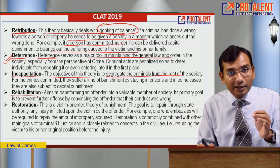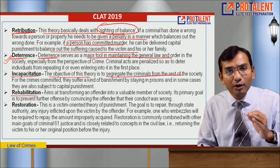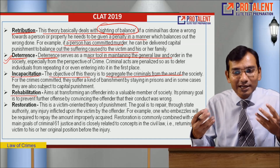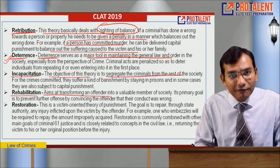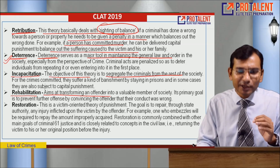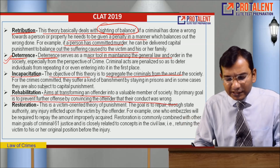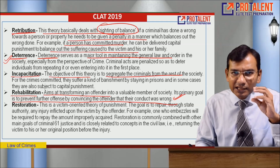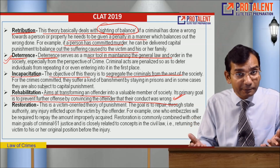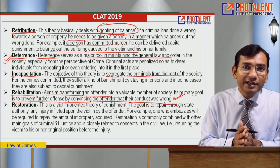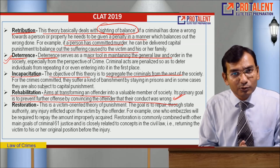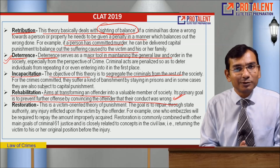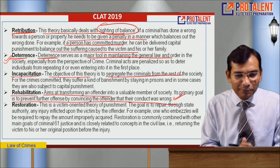Rehabilitation aims at transforming the offender into a valuable member of society. After punishment and realization of their mistake, they become ready to do new things. Its primary goal is to prevent further offense by convicting the offender that their conduct was wrong - telling them 'you made a mistake, don't do it again.' An exemplary punishment is given and the person is released. The objective of the justice process is to stop those who break the law, not necessarily to kill them - to stop the entire process of law-breaking.